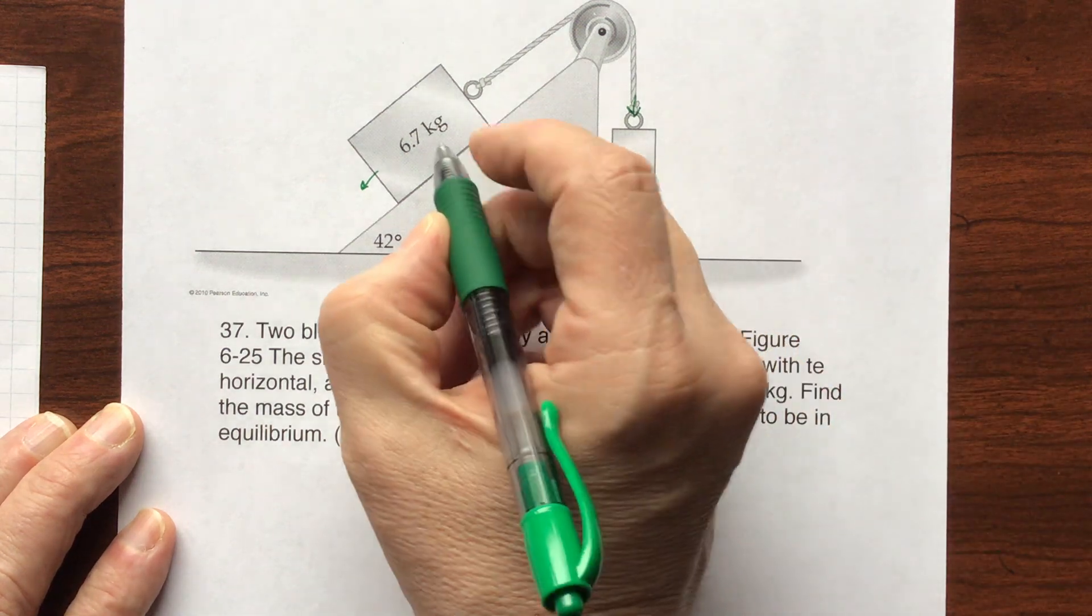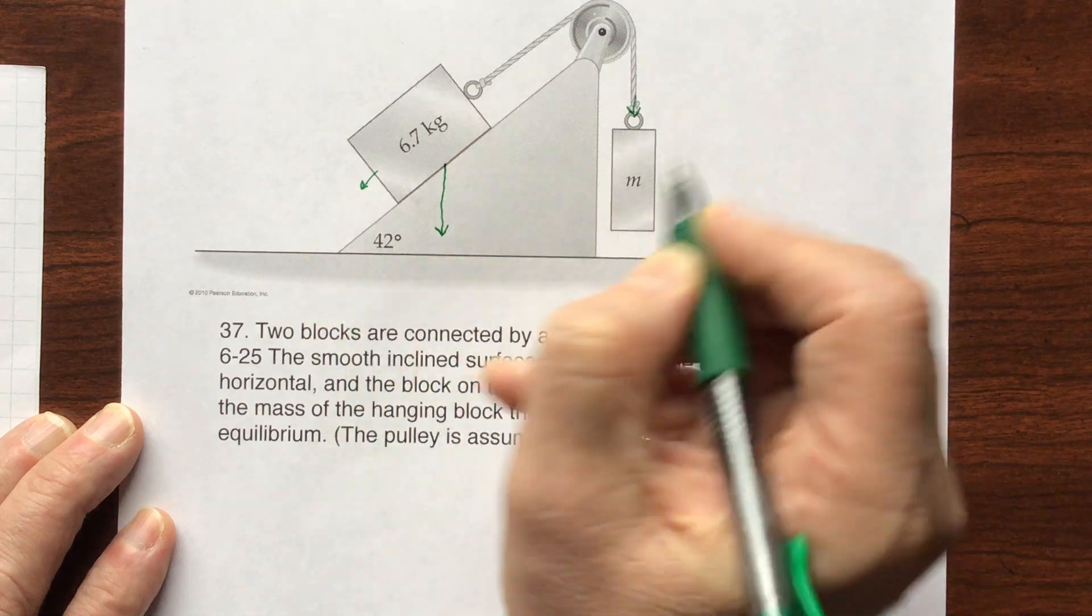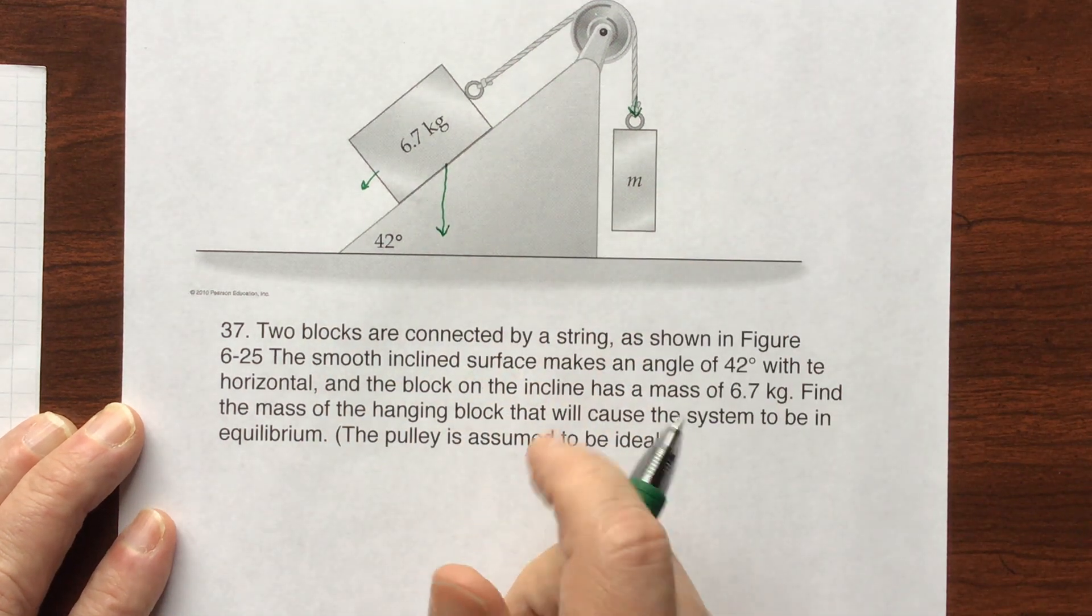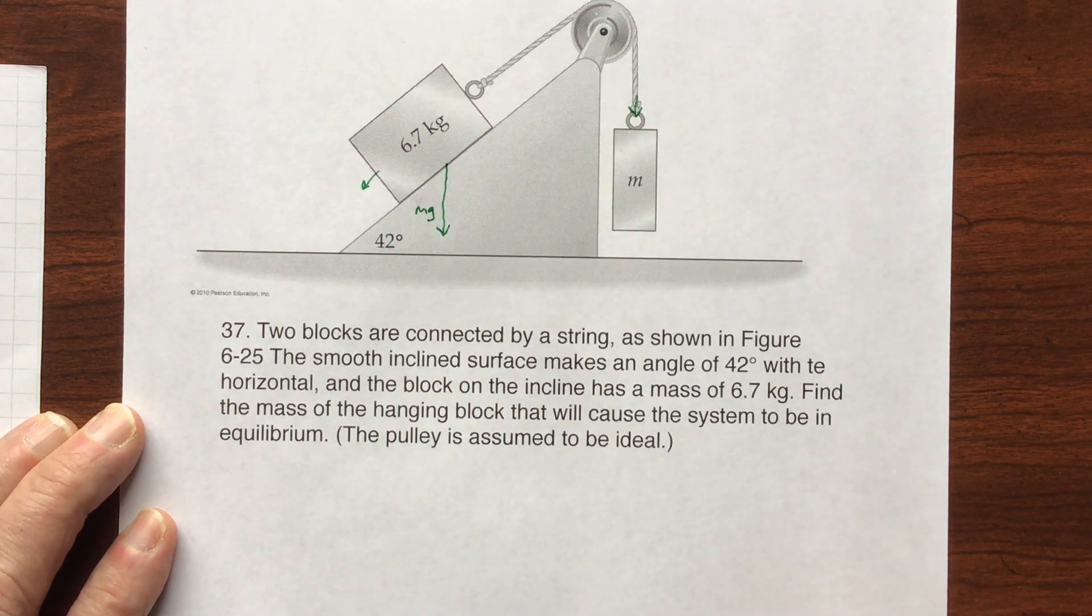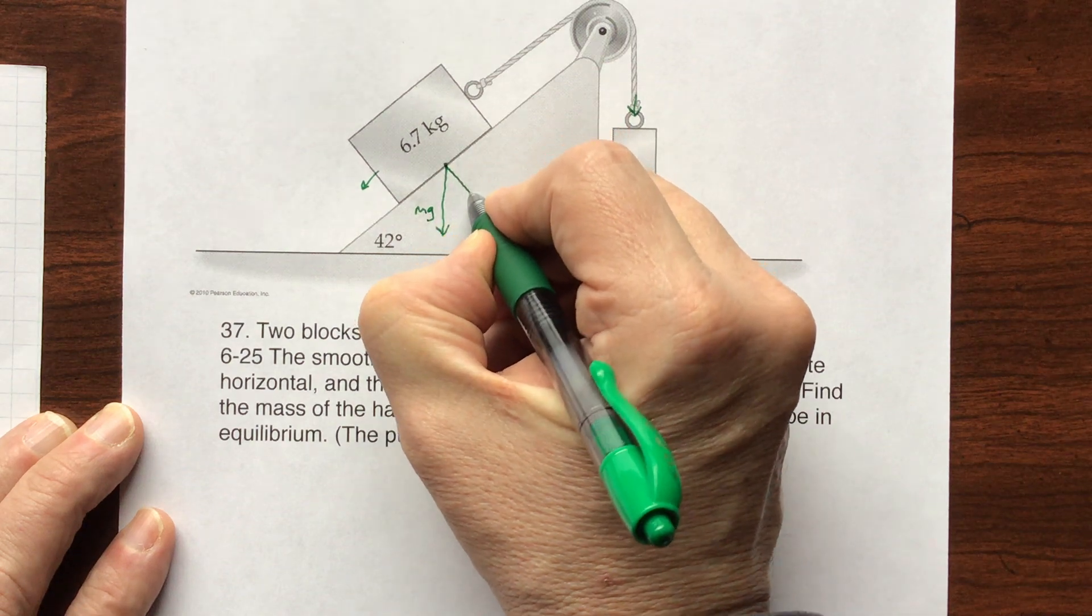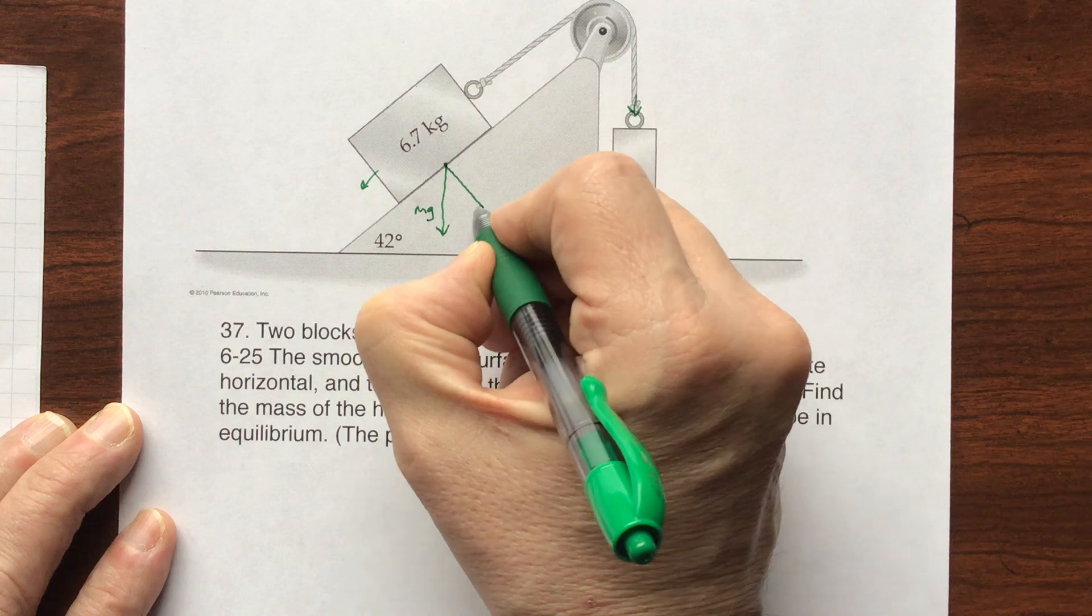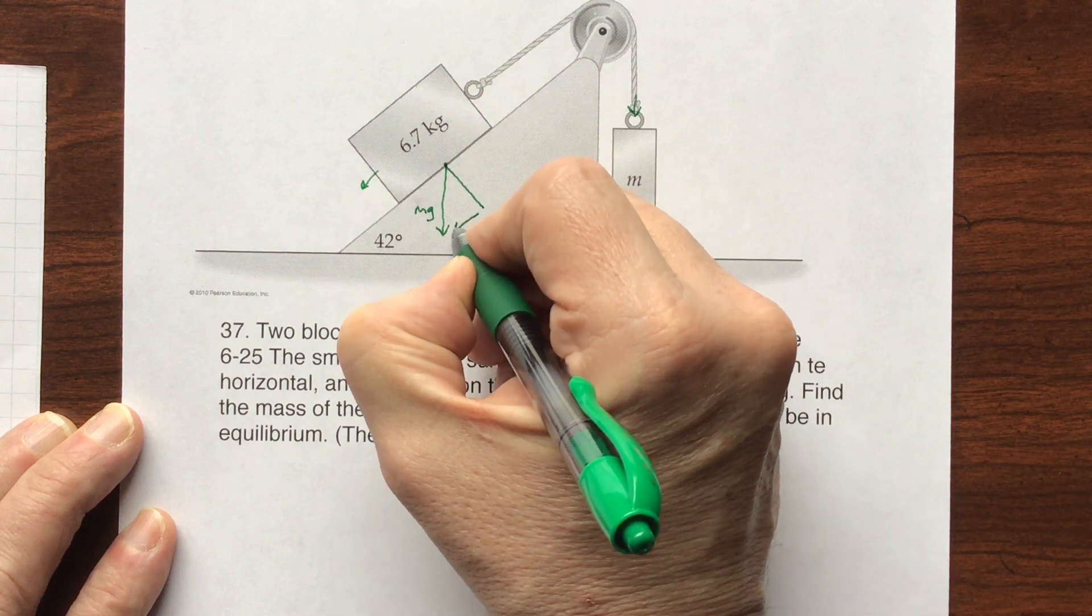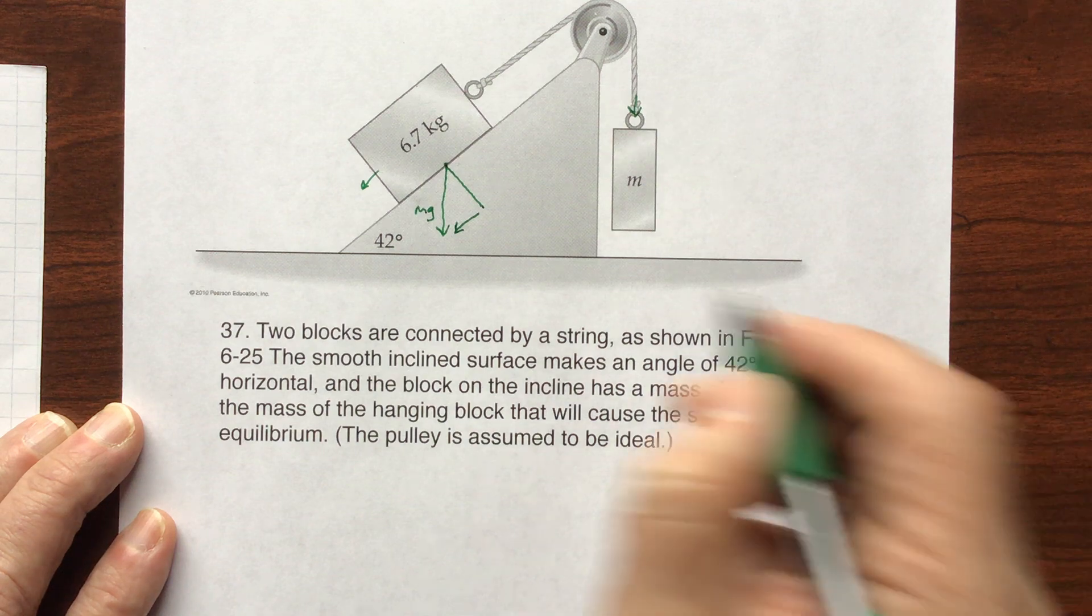So the only thing I know, and I always start with the same thing, is that the force acting down towards the center is weight, that's mg, and I can break it into two components: perpendicular to the surface and parallel to the surface. That will be a 90 degree angle.